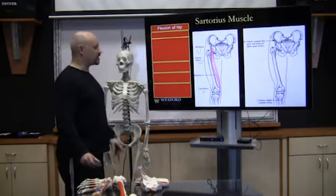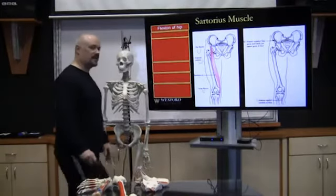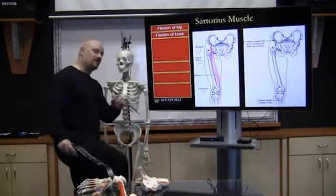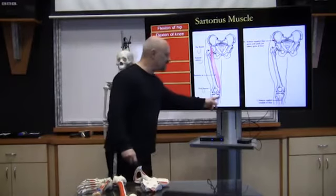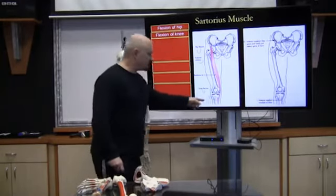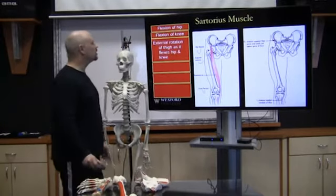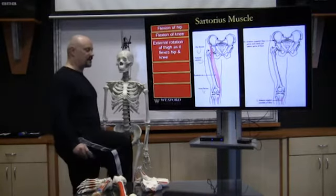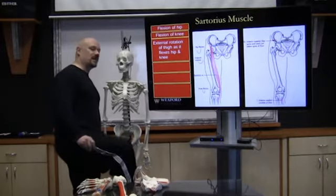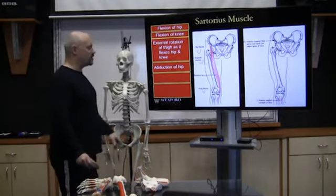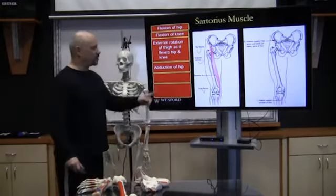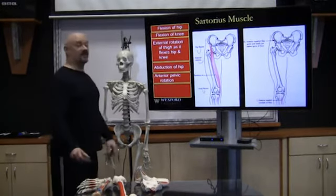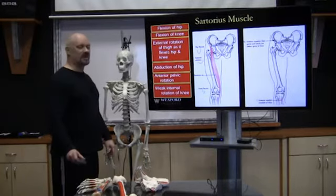The sartorius does flexion of the hip and helps with flexion of the knee. It does external rotation of the thigh as it flexes the hip and knee — when we flex the hip, it will actually externally rotate the leg. It does abduction of the hip, assists with anterior pelvic rotation, and there is a weak internal rotation of the knee.